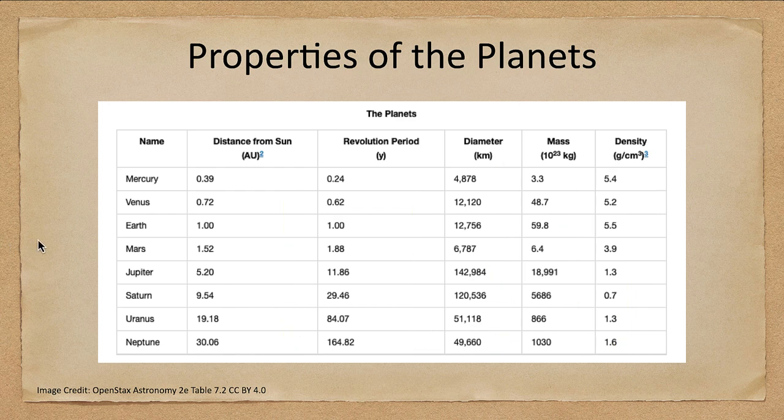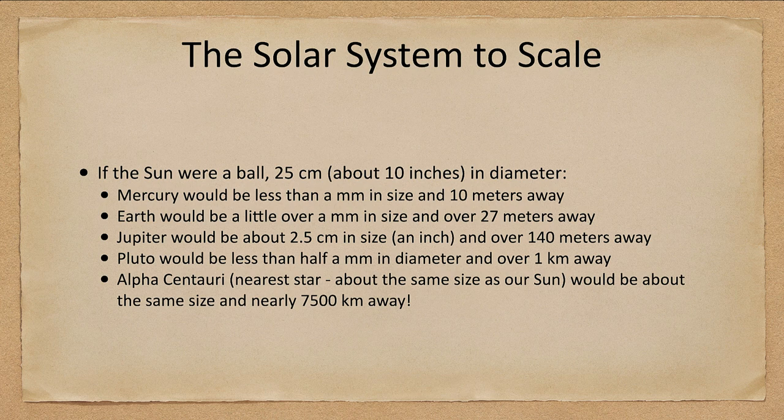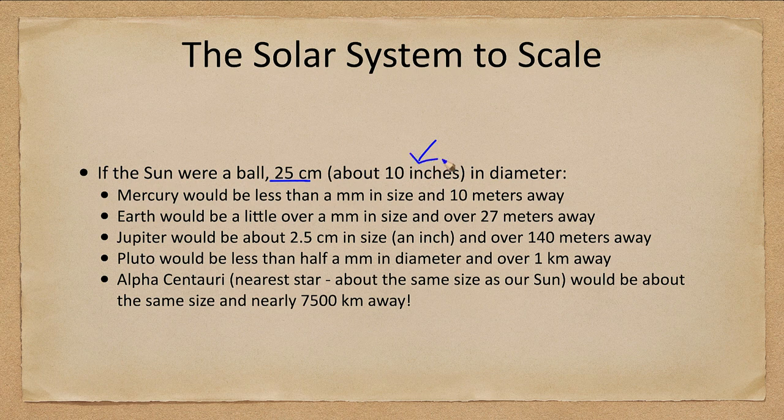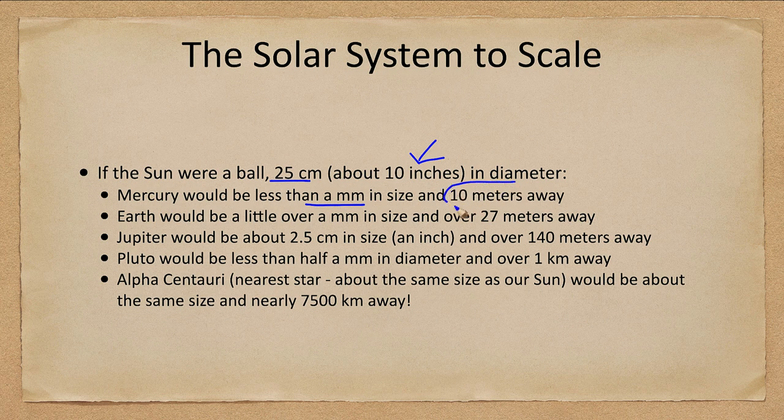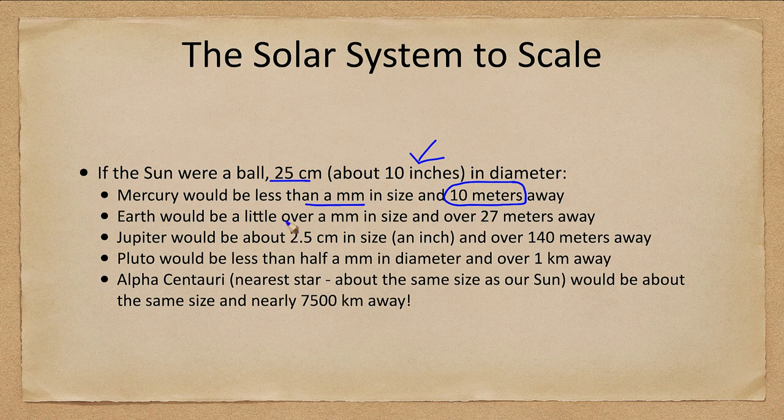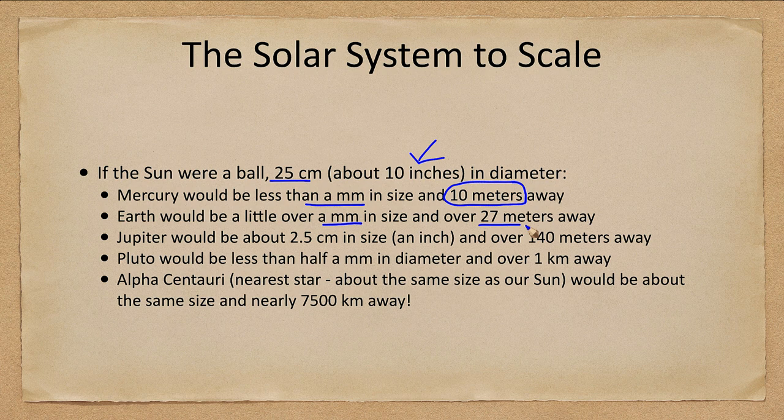So let's think about our solar system to scale. We can imagine scaling the sun down to about 25 centimeters, or about 10 inches in diameter. Mercury would be less than a millimeter in size and would be 10 meters away. So within those 10 meters between Mercury and the sun is nothing. Earth would be a little over a millimeter in size and about 27 meters away, almost 100 feet away from the sun.